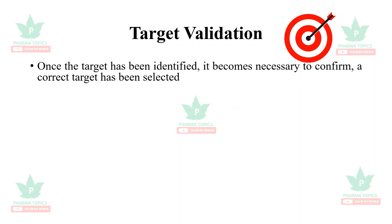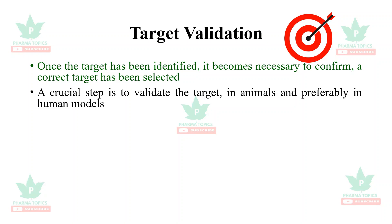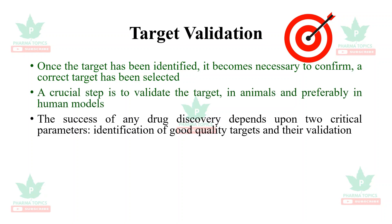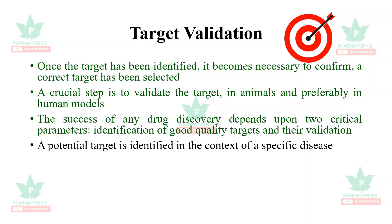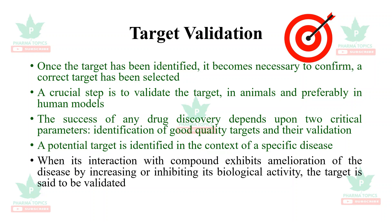Once the target has been identified, it becomes necessary to confirm whether a correct target has been selected or not. It is a crucial step to validate the target in animals and preferably in human models. The success of any drug discovery depends upon two critical parameters: identification of good quality targets and their validation. A potential target is identified in the context of a specific disease when its interaction with the compound exhibits amelioration or a decrease of the disease by increasing or inhibiting the biological activity — then the target is said to be validated.